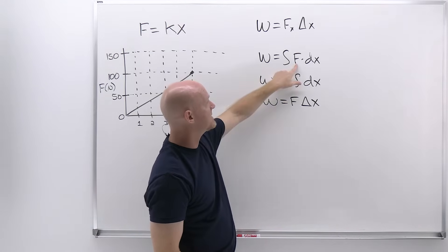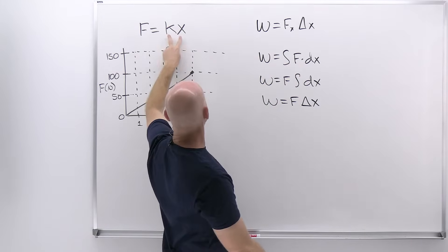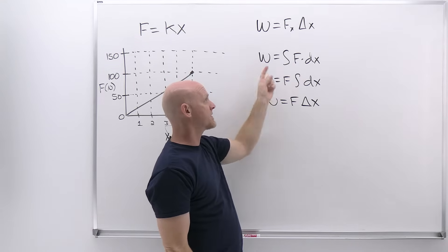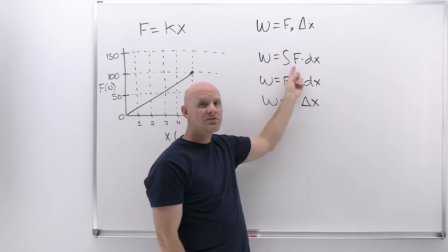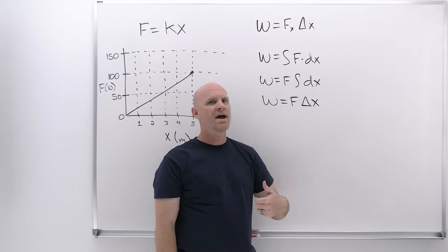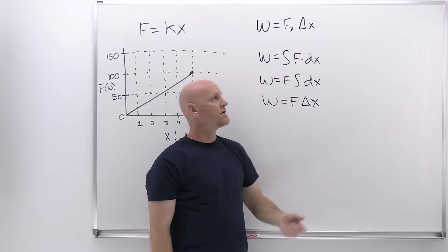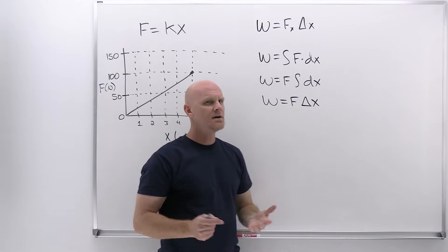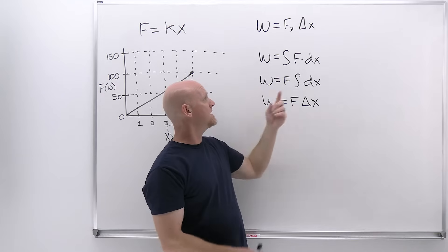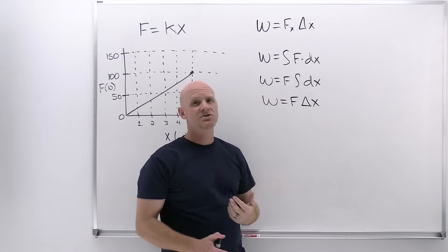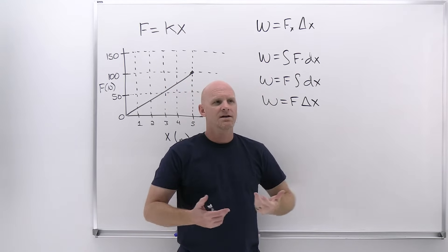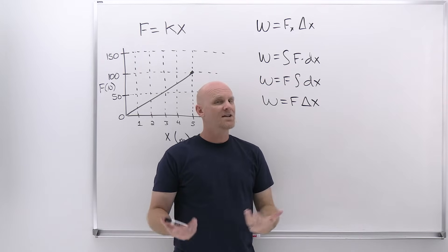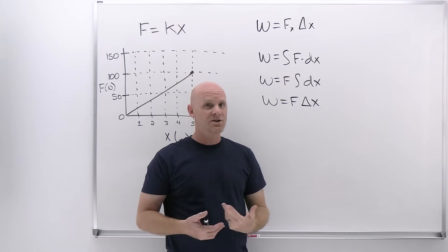In that case, we have to substitute the equation in. We'd put kx in for F, the spring constant k is still a constant and pulls in front of the integral, and we'd be taking the integral of x dx. The integral of x dx is one half x squared, and all of a sudden the work ends up equaling one half kx squared. That should look familiar — that's the formula for elastic potential energy. Integrating from x-initial to x-final, you find that work is just the negative of the change in potential energy.